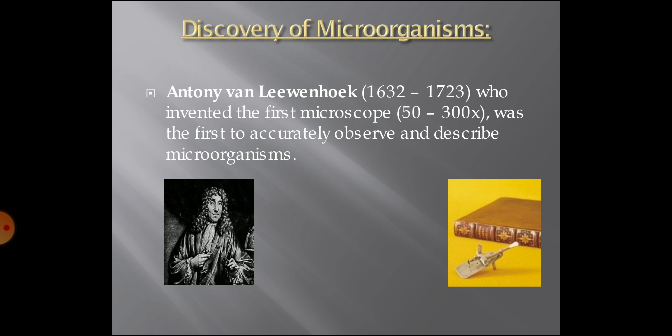Discovery of Microorganism: Antony Van Leeuwenhoek, 1632 to 1723, invented the first microscope with a magnification range of 50 to 300, and was the first to accurately observe and describe microorganisms.